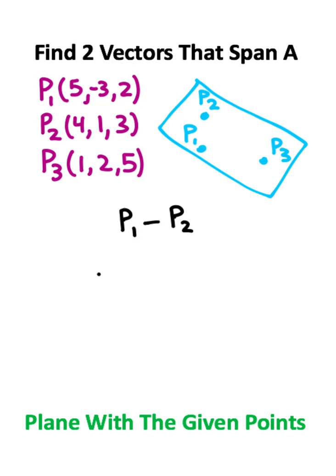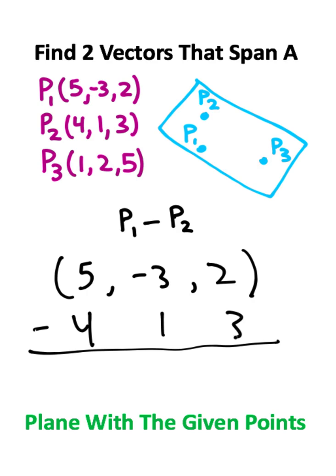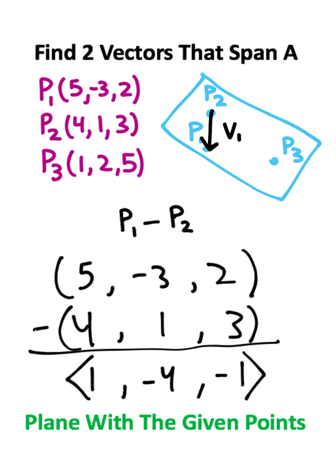So I can subtract point two from point one, in which case we'll have point five, negative three, two, and we'll subtract off four, one, three. These are the two points that we're subtracting, and five minus four is one, negative three minus one is negative four, and two minus three is negative one. And we just created a vector that spans this plane between the two points that we just subtracted.